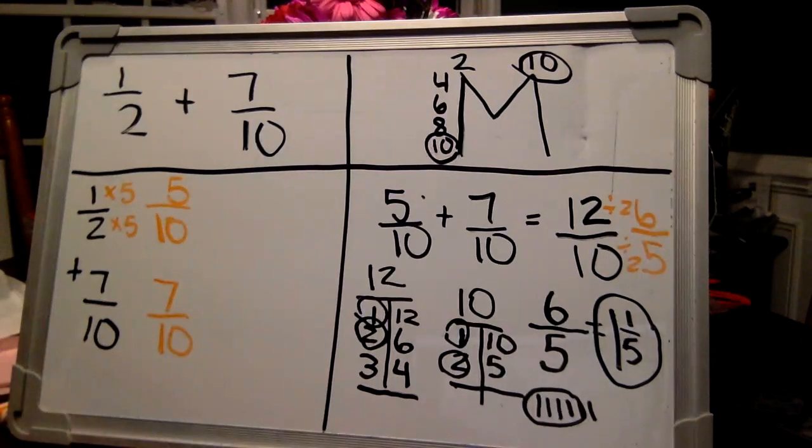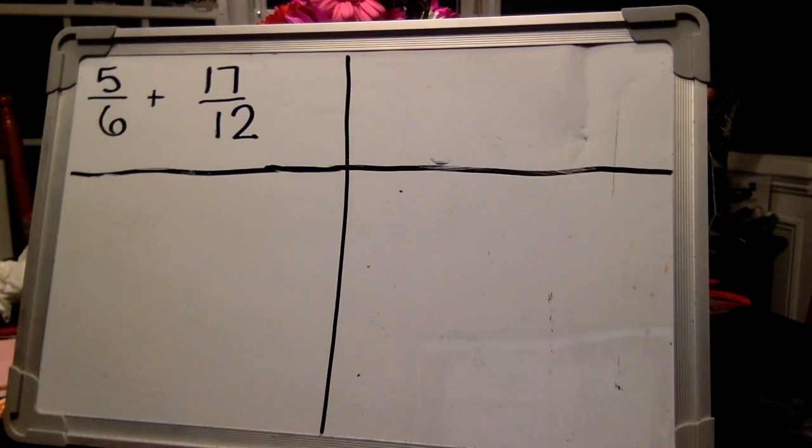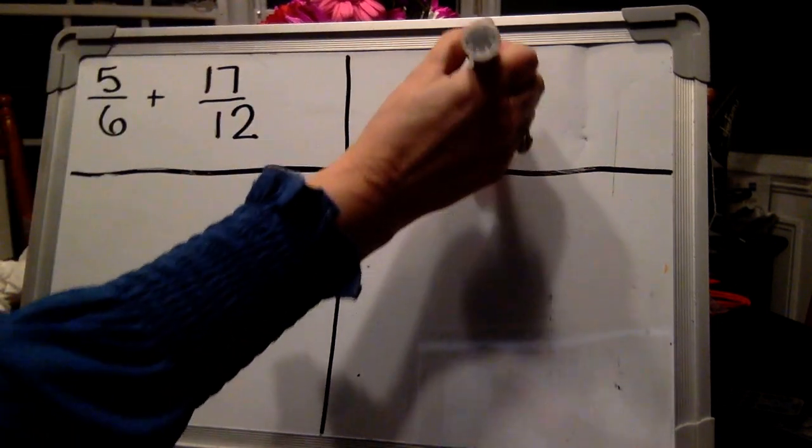Get your board ready. Okay. Here is your problem. Five-sixths plus seventeen-twelfths. Go ahead and write it down if you haven't done it yet. All right. What's going to be our next step? We need an M. Make an M.